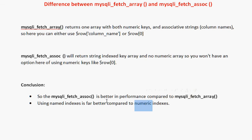The second point is that using the name index — the column name — is better than using a numeric index. For example, suppose you created a table with a field named ABC. If later you add a new field before ABC, the numeric index will change, but the column name will remain the same. So using the name index is more reliable.